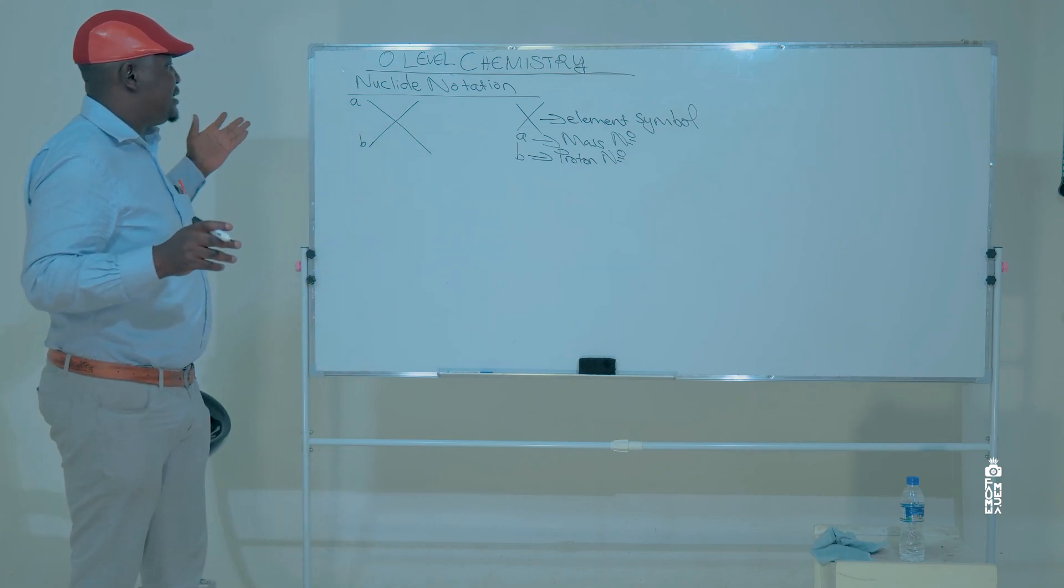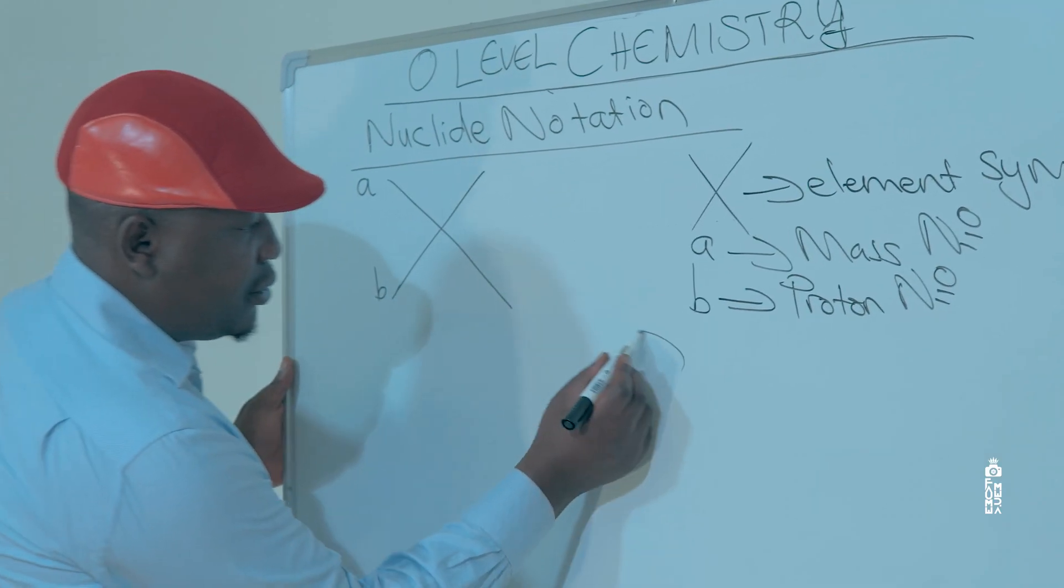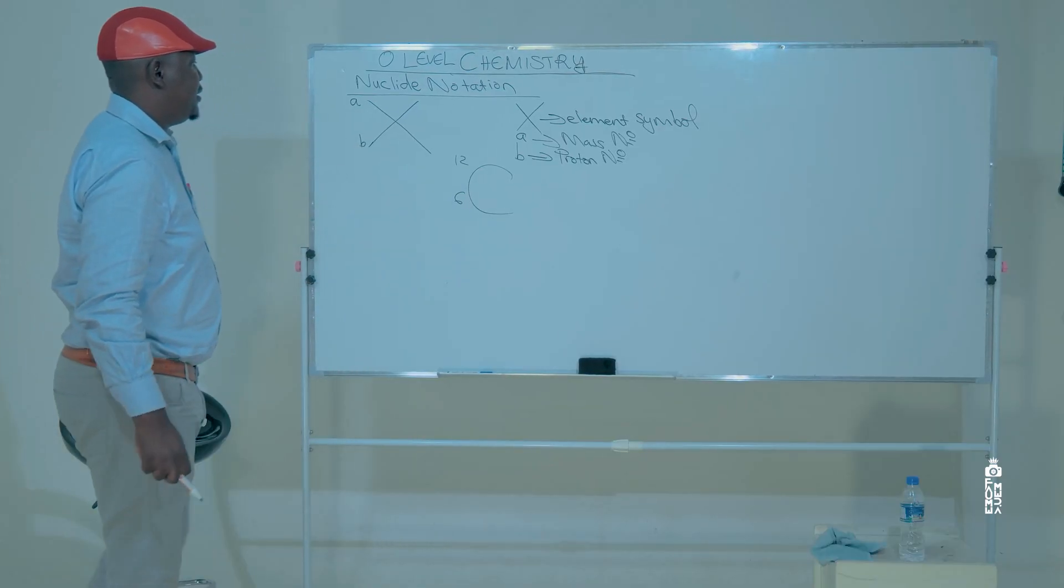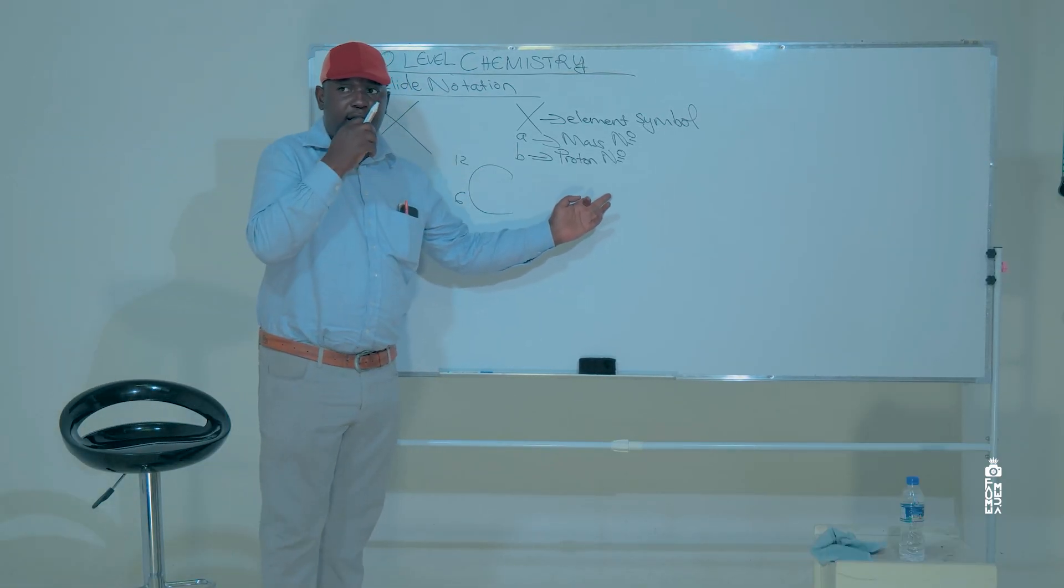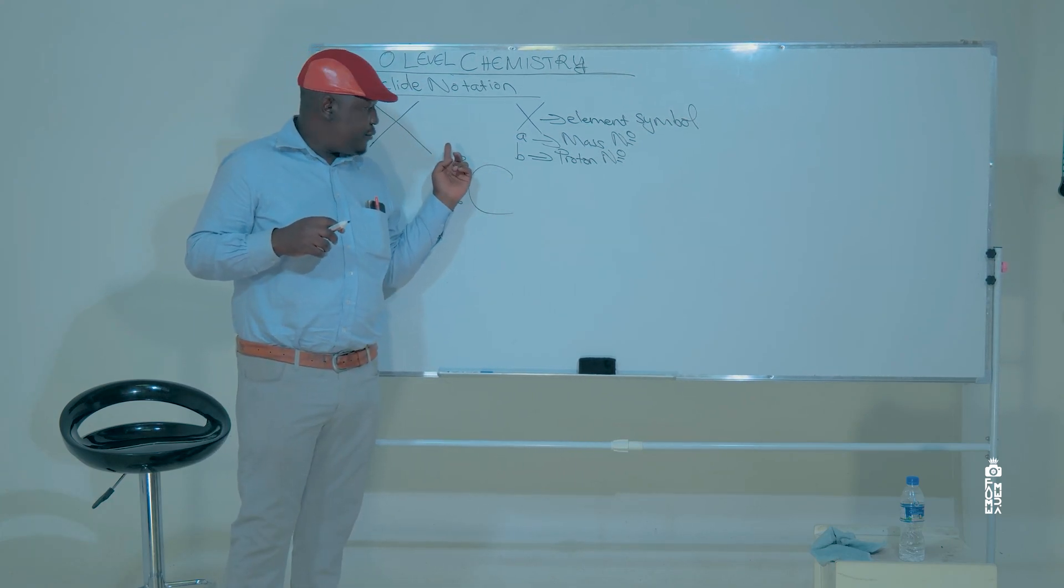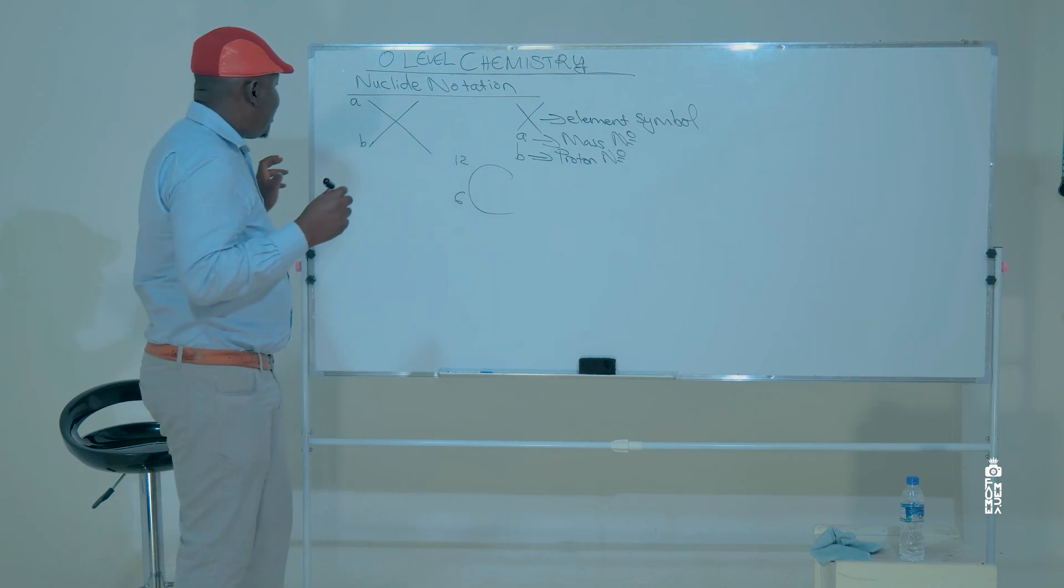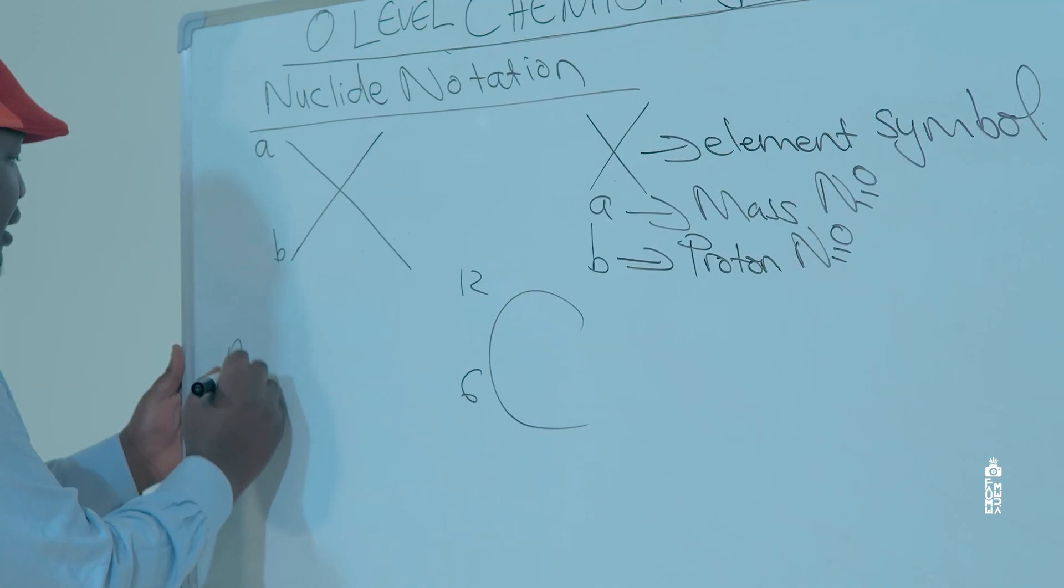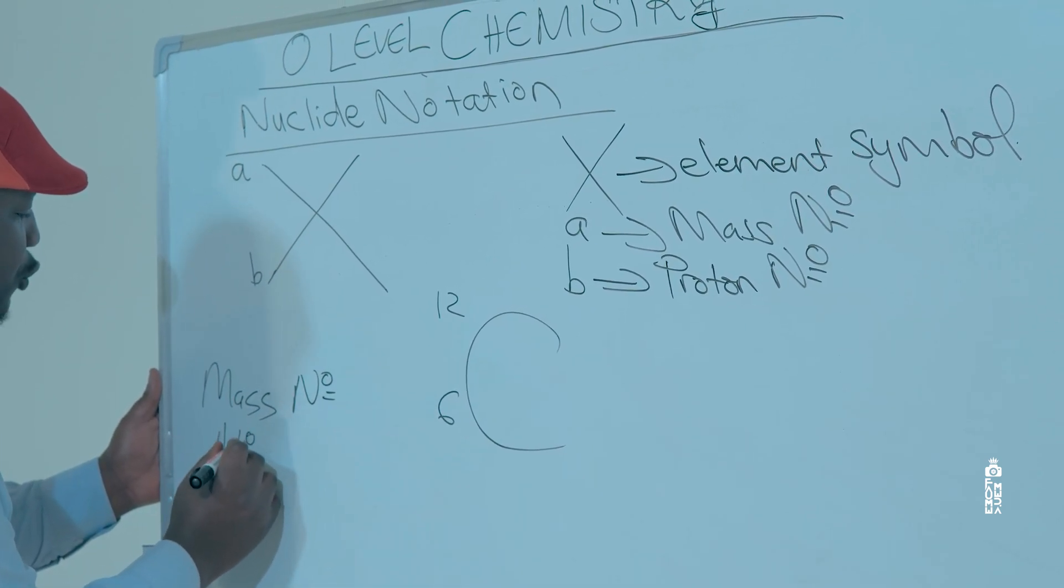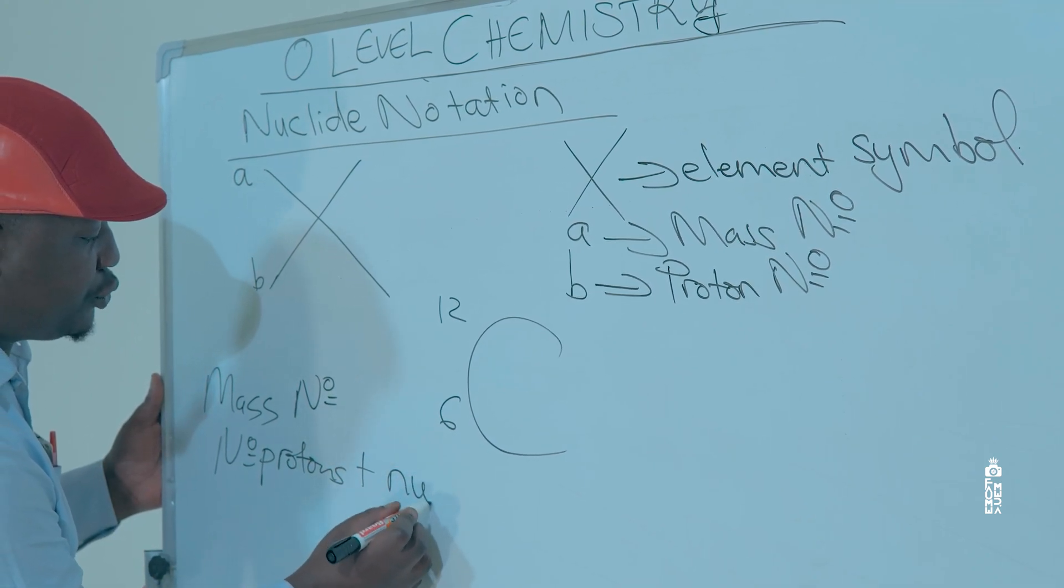So let me give you examples of the nuclide notation. Carbon-12, 6. C is the element for carbon. And carbon has got a mass number of 12 and then a proton number of 6. So the mass number of an element is actually the number of the protons plus the number of the neutrons.